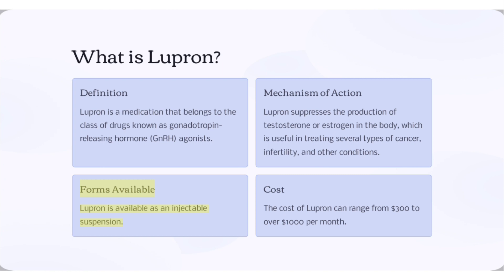Lupron is available as an injectable suspension. The cost of Lupron can range from $300 to over $1,000 per month.